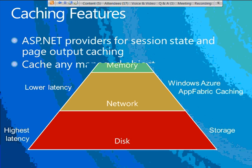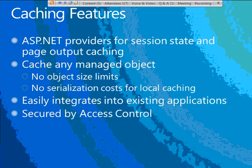For ASP.NET website developers used to session state or page output caching, there are ASP.NET providers that make it easy to plug in those familiar features with the AppFabric Cache service. For general caching, you can cache any managed .NET object with no limits on size. With local caching enabled, there's really no serialization cost. It integrates easily through existing applications, and access to the cache is secured through the Access Control Service.